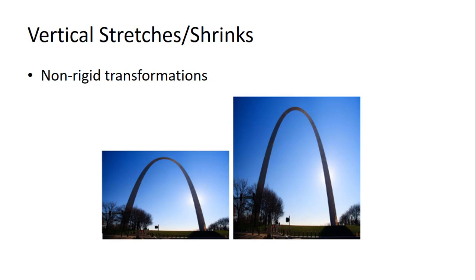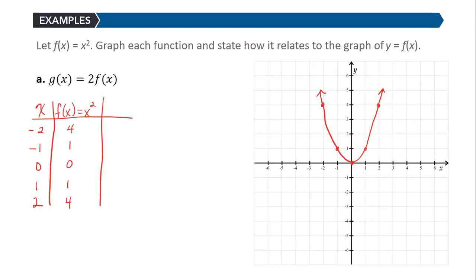So let's look at what algebraically represents those types of transformations. We'll consider the graph of y equals x squared, which is our basic squaring function, the basic quadratic, and we want to graph each of these functions and state how they relate to the graph of y equals f(x).